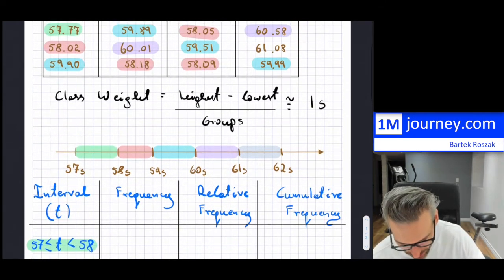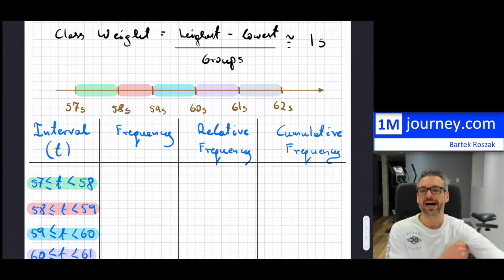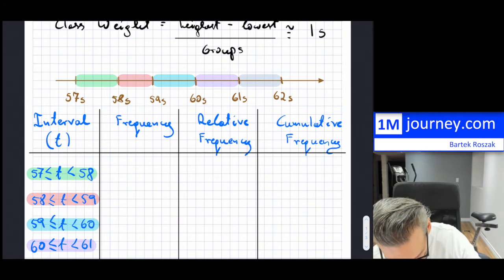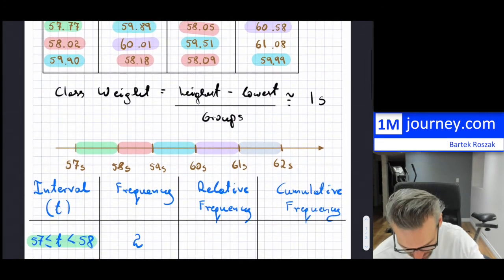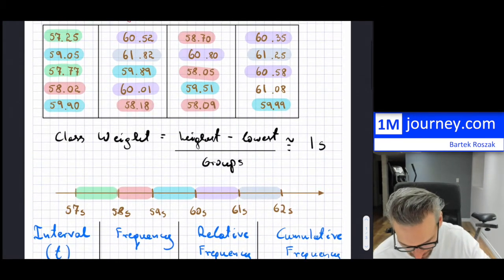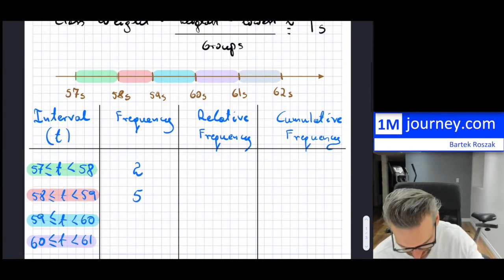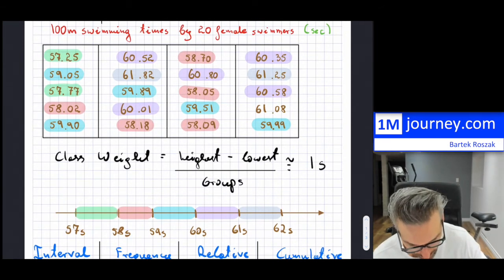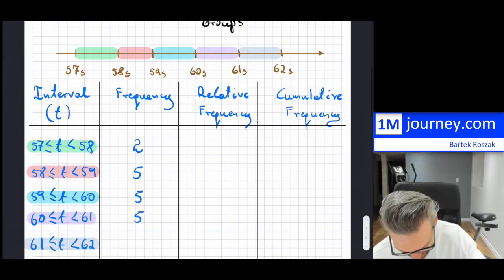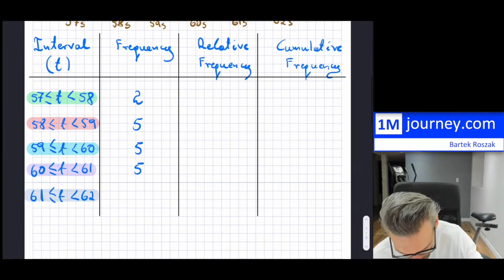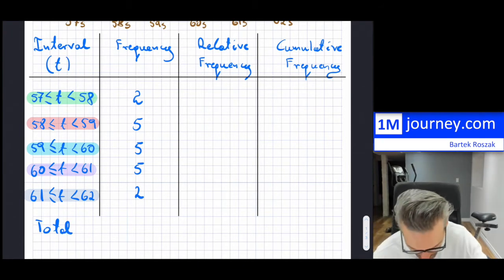So now let's actually count up the frequencies. So frequency just means how many data points fall in between that interval. So between 57 and 58, I can count that up. So there were two data points there. Between 58 and 59, we had 1, 2, 3, 4, 5 data points. Between 59 and 60, 1, 2, 3, 4, 5 data points. And now between 60 and 61, 1, 2, 3, 4, 5. So that's interesting. And then lastly, what do we have there? Two. So two data points at the end.